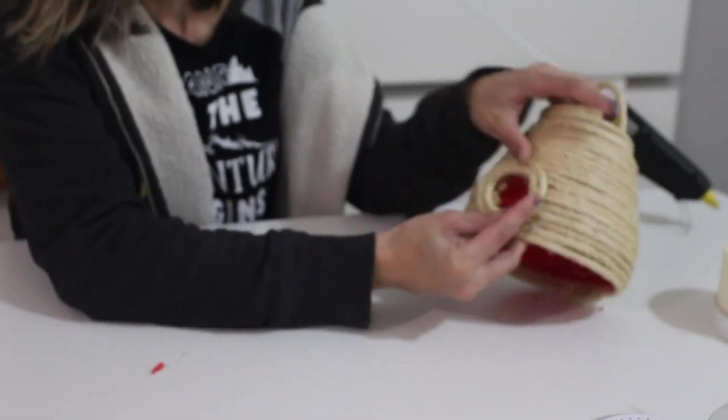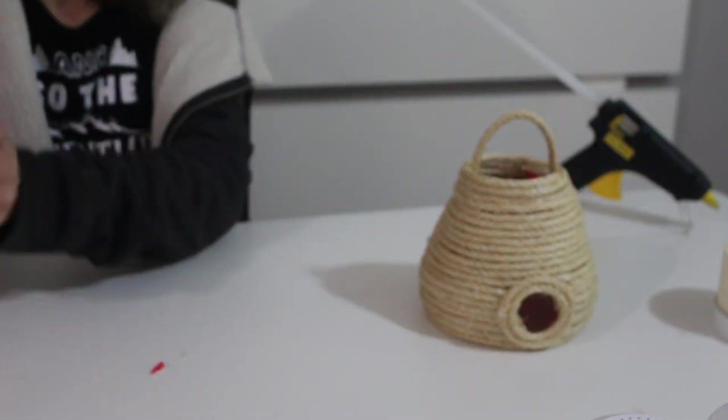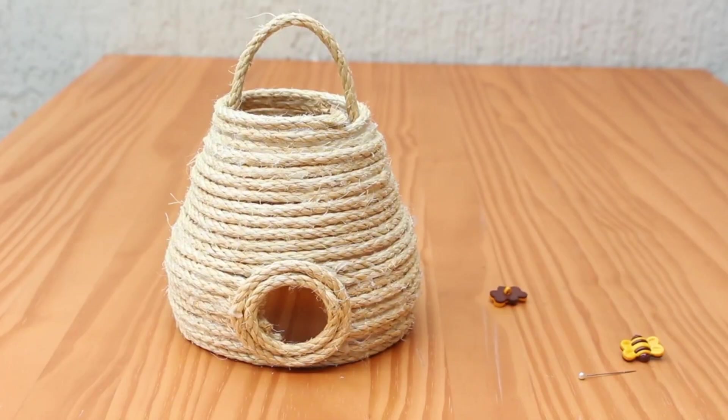You just need to glue your circles on here at the front of your beehive, and I'm gonna use some bumblebee buttons to add on to give it that extra something and make it look even nicer.